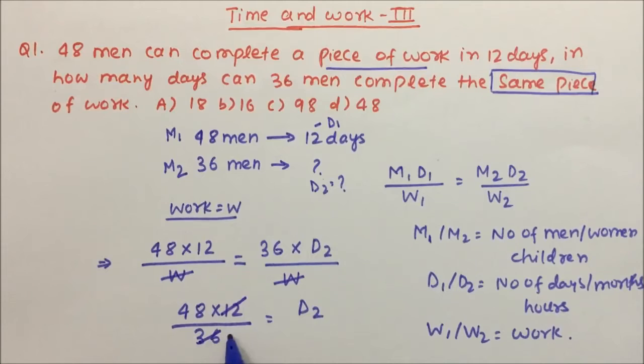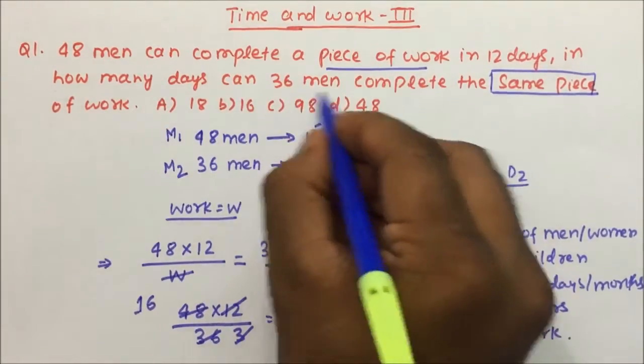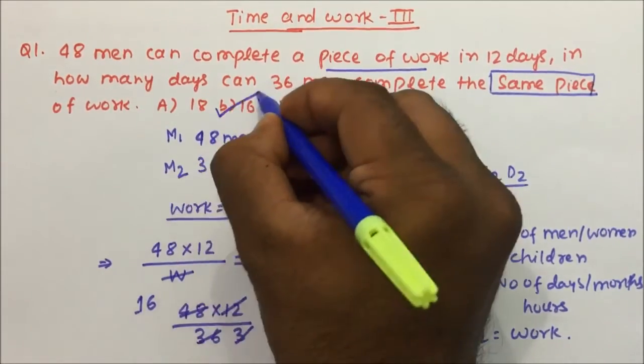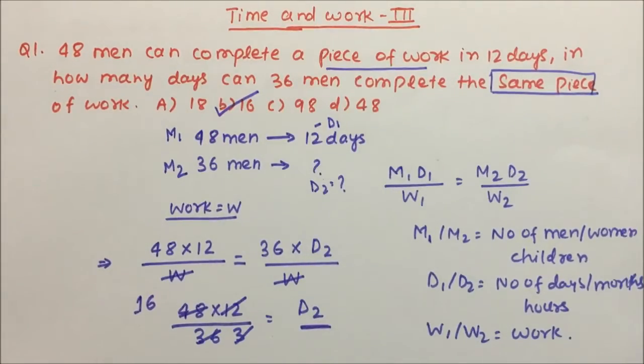Now 12 into 3 and this is 3 into 16. So the number of days required by 36 men to complete the work is 16. Our answer will be 16.